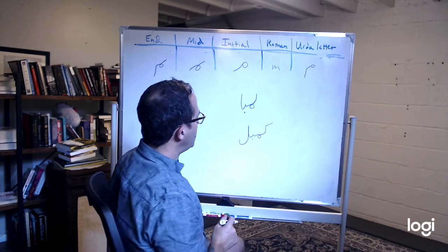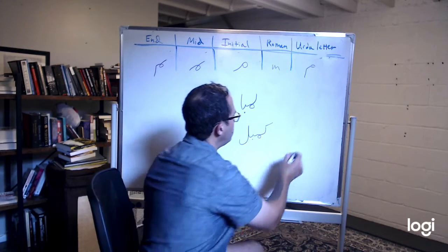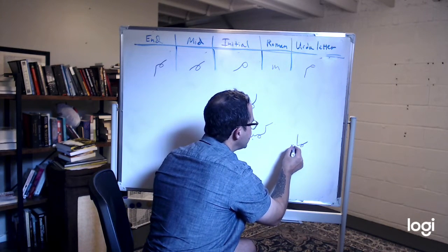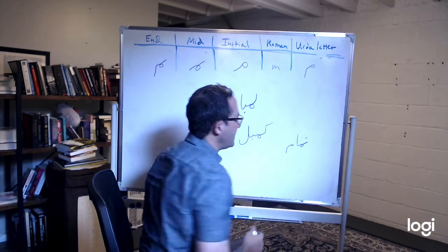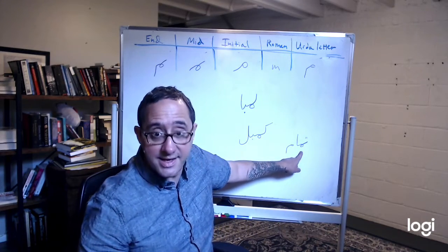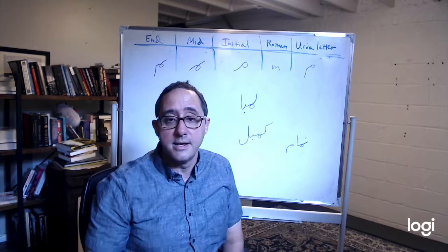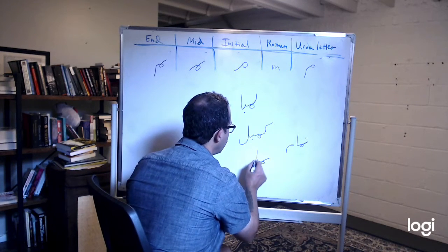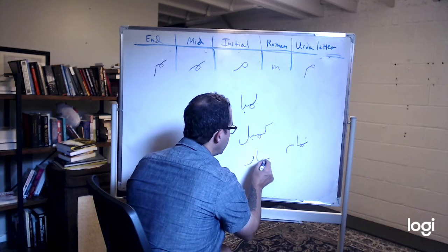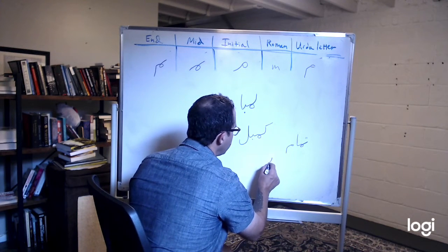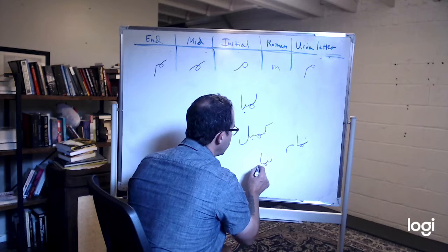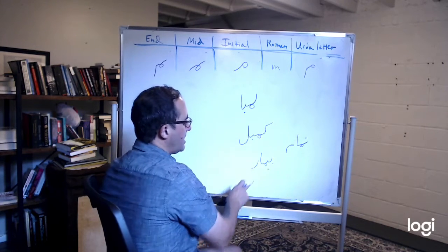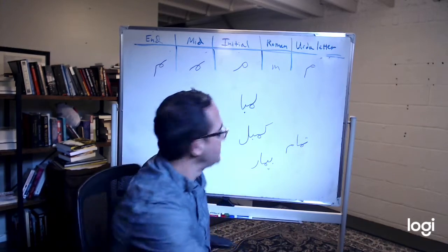Kambal means blanket. Tamam - I forget what this means. Tamam - I'm forgetting what tamam means, but that's the T into the M. Bimaar - being sick. Actually, I think bimaar is like this. I think it's actually a B-E into the M-R.